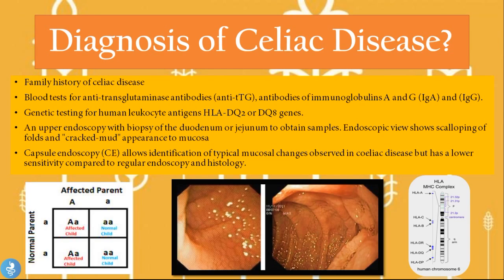An upper GI endoscopy with biopsy of the duodenum or jejunum can also be done to obtain samples. The endoscopic view shows scalloping of the folds and a cracked mud appearance of the mucosa, which is due to damaged villi within the small intestine — it looks like little bubbles and is compared to cracked mud. Capsule endoscopy can also identify typical mucosal changes in celiac disease, but has lower sensitivity compared to regular endoscopy with biopsy and histology.